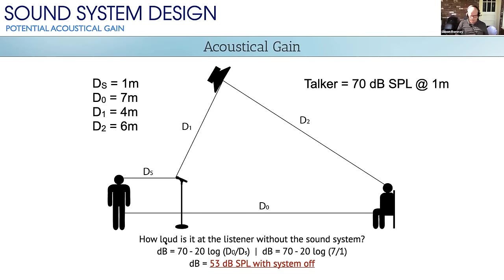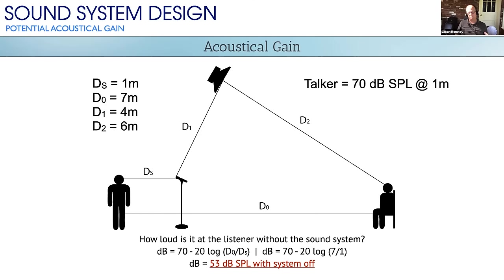We can figure out how loud it is at the listener using the formula: 70 minus 20 times the log of D0 divided by DS — which is 70 minus 20 times log(7/1) — giving us approximately 53 dB SPL. That's what the listener would hear if we didn't show up for work, assuming the talker is at 70 dB SPL. Not particularly loud — there's a reason we put a sound system in.